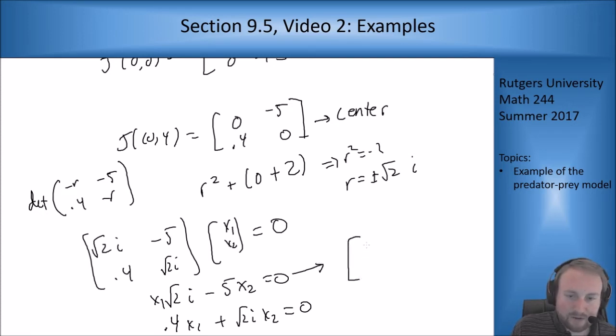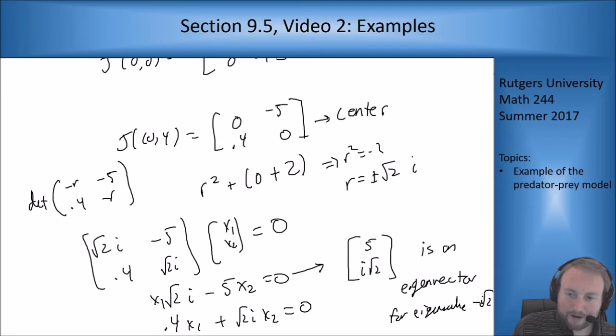If I work on this, this tells me that for my vector, I have a vector that is going to be, if I take 5 x1 and i root 2 x2, this will be an eigenvector for eigenvalue minus root 2i. Because if I take x1 to be 5 and x2 to be i root 2, that term goes to 0.